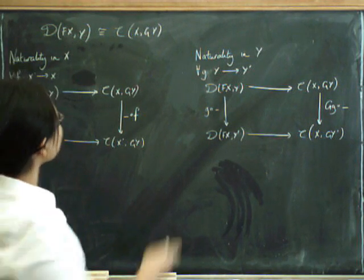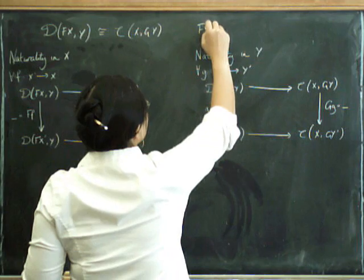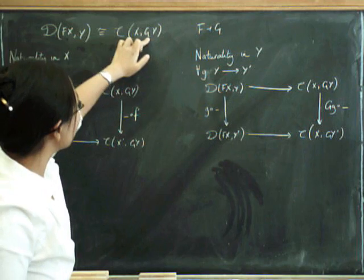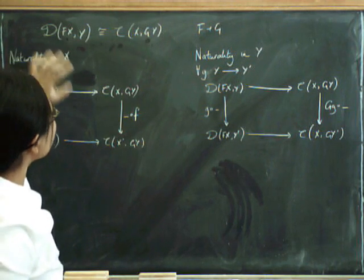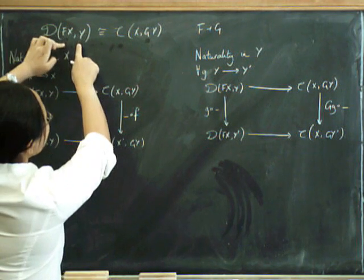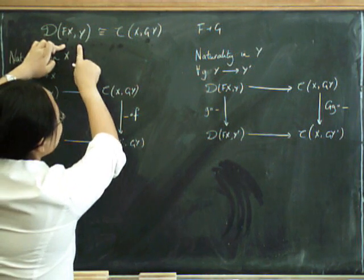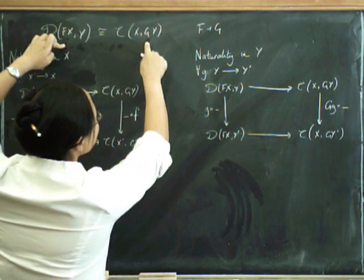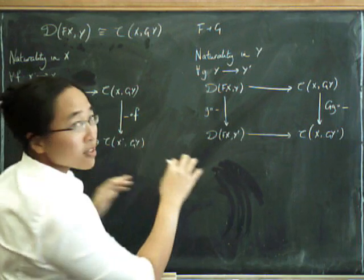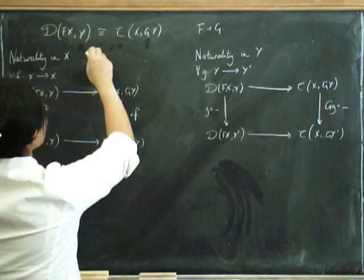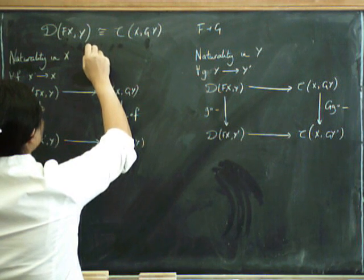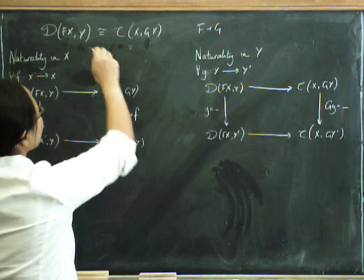So this is F being left adjoint to G. Another way of remembering that is F appears on the left in the homsets and G appears on the right in the homsets. And the first part of this is there's a bijection between these two things, which means that for every morphism from F of X to Y in D, there is a corresponding morphism from X to G of Y in C. I like to call this sort of transpose, and you can write that as a bar. So given a morphism S over here, you would write S bar over there.